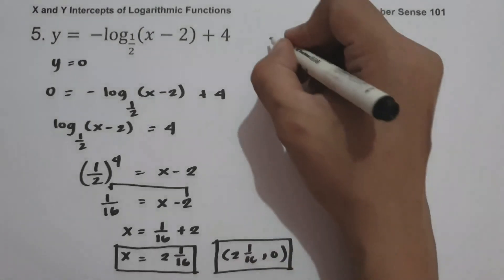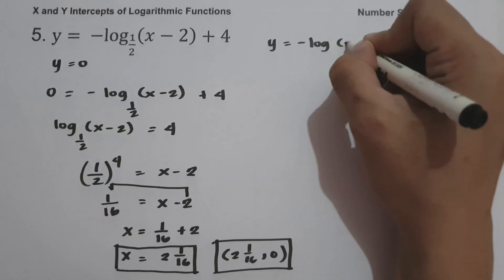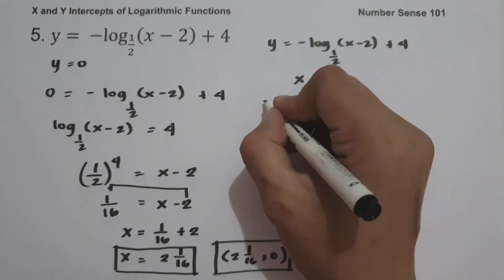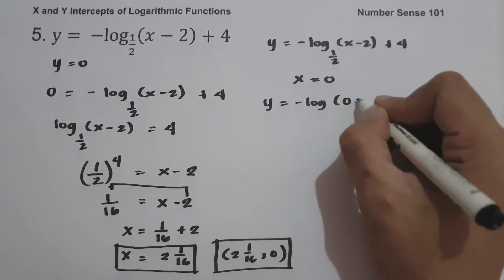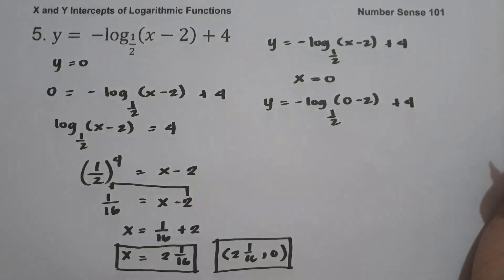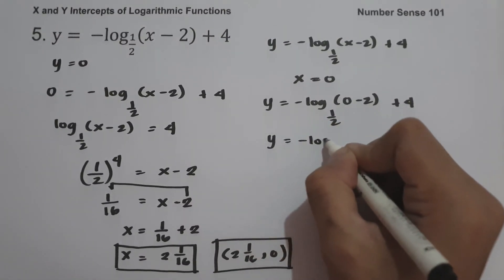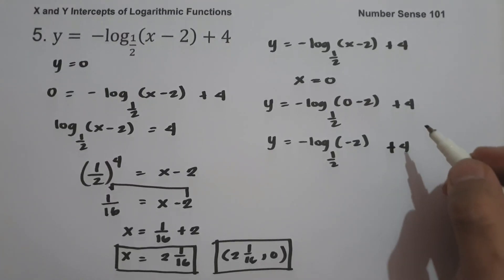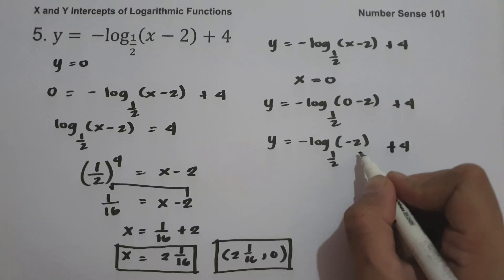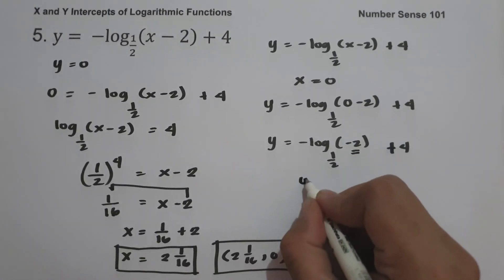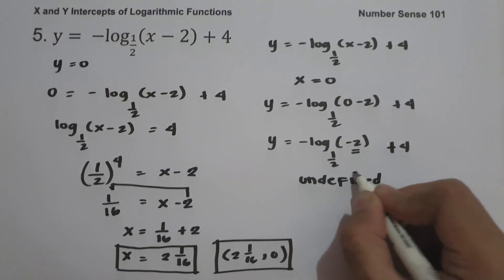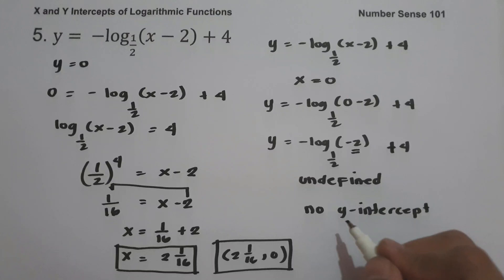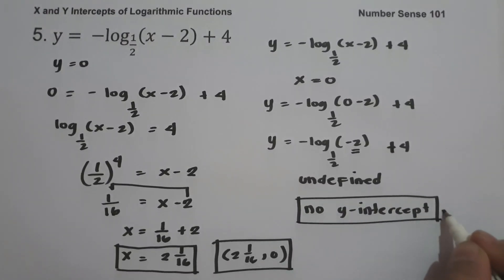And for the y-intercept, let us have y equals negative log(x − 2) base one-half plus 4, and set x equal to 0. So this will be y equals negative log(0 − 2) base one-half plus 4, which gives log(−2) base one-half. To determine the y-intercept, our argument should be greater than 0. Since negative 2 is less than 0, our logarithm is undefined. Therefore, we don't have a y-intercept — our graph will not cross the y-axis.